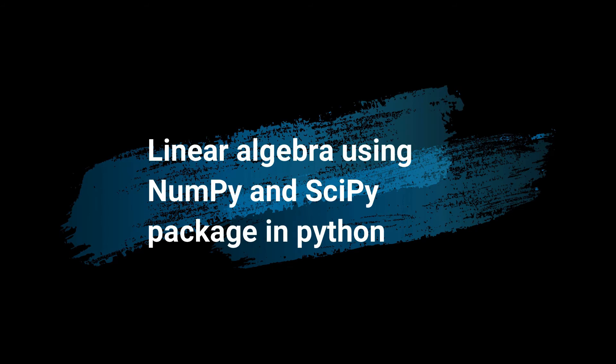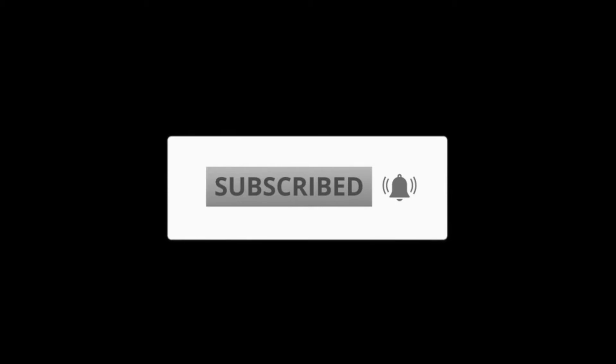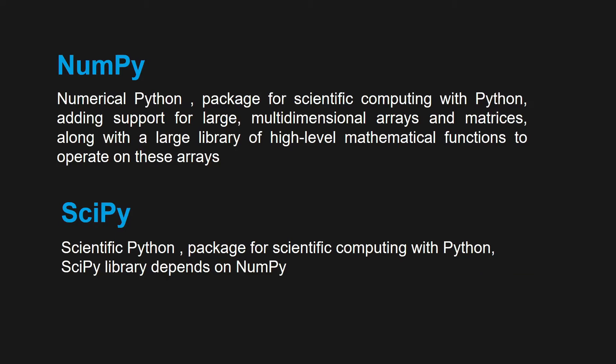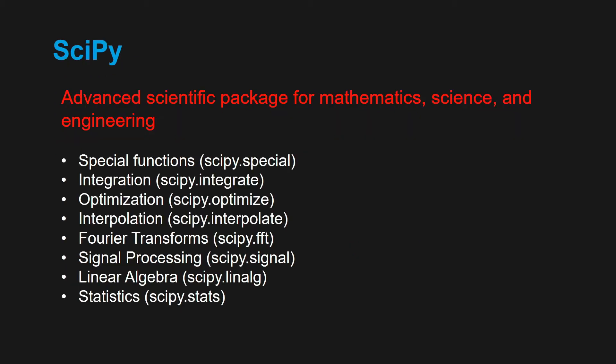Hello and welcome back. In this video we are going to discuss linear algebra using NumPy and SciPy packages in Python. NumPy is called the numerical Python package and SciPy is called the scientific Python package. NumPy mainly deals with arrays and matrices and has inbuilt high-level mathematical functions, while SciPy is an advanced scientific package for mathematics, science, and engineering.